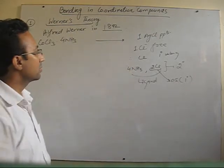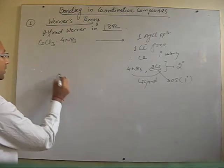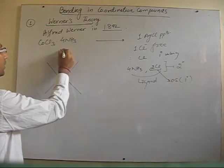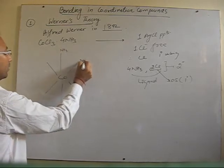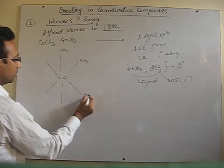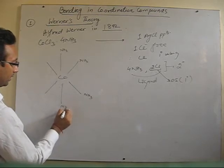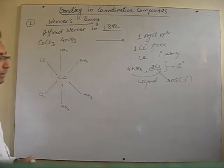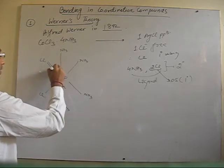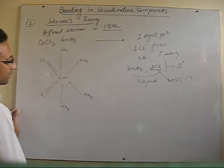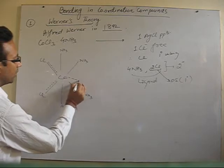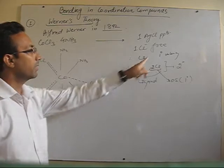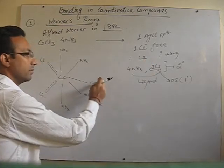On the basis of this discussion, we can draw the structure: ammonia at four positions while Cl at two positions. These two Cl are special because they satisfy both primary and secondary valency. There is one Cl represented by only a dotted line, representing only the primary valency — this is the ionizable part.